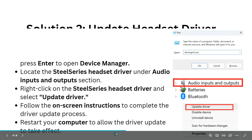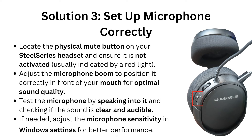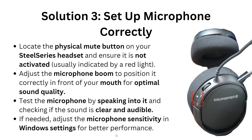Now we are going to solution three: set up your microphone correctly. Locate the physical mute button on your headset and ensure it is not activated — usually indicated by a red light. Adjust the microphone boom to position it correctly in front of your mouth. Test the microphone by speaking into it and check if the sound is clear. If needed, adjust the microphone sensitivity in Windows settings for better performance.